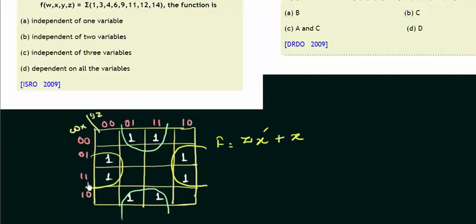Or in this, x is 1, y is changing from 0 to 1 so we will not write it, and z is 0, so z complement. Or we can write it as x or z complement.